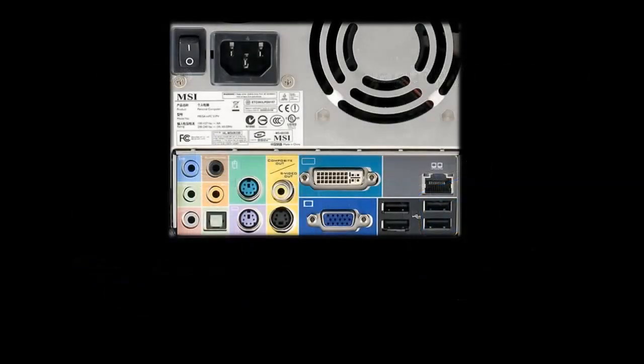If you look at the back of a desktop system, you'll see all sorts of connectors, so let's walk through them. First off, you should see a plug for a power cord, and next to it, a switch. This switch is not the power button, but it must be in the on position for your computer to have power. It's simply there as a convenience, so you can cut off power to the system without pulling out the cord.